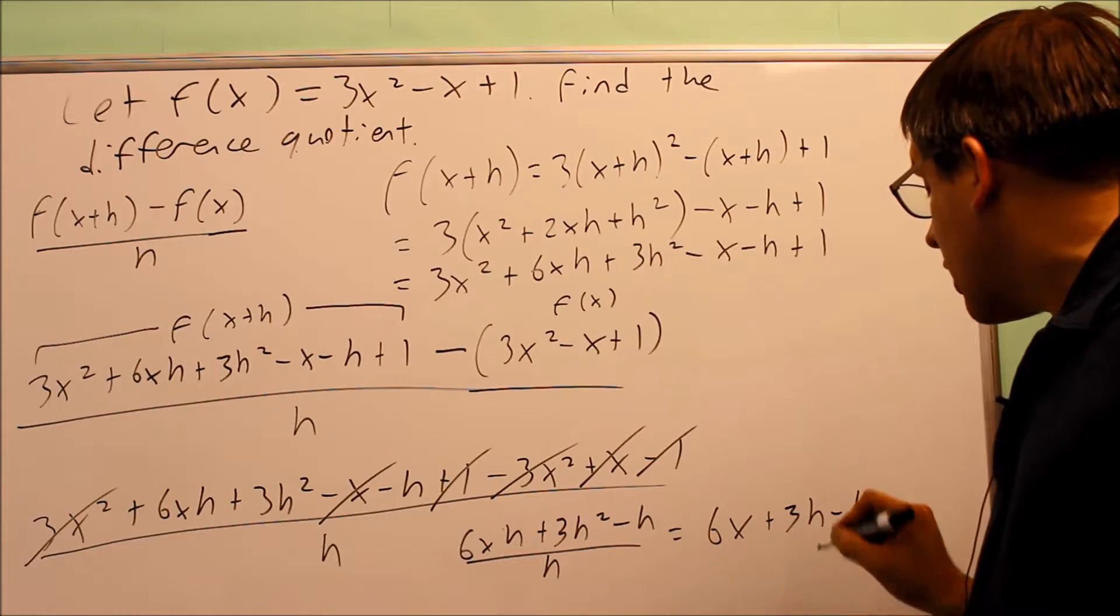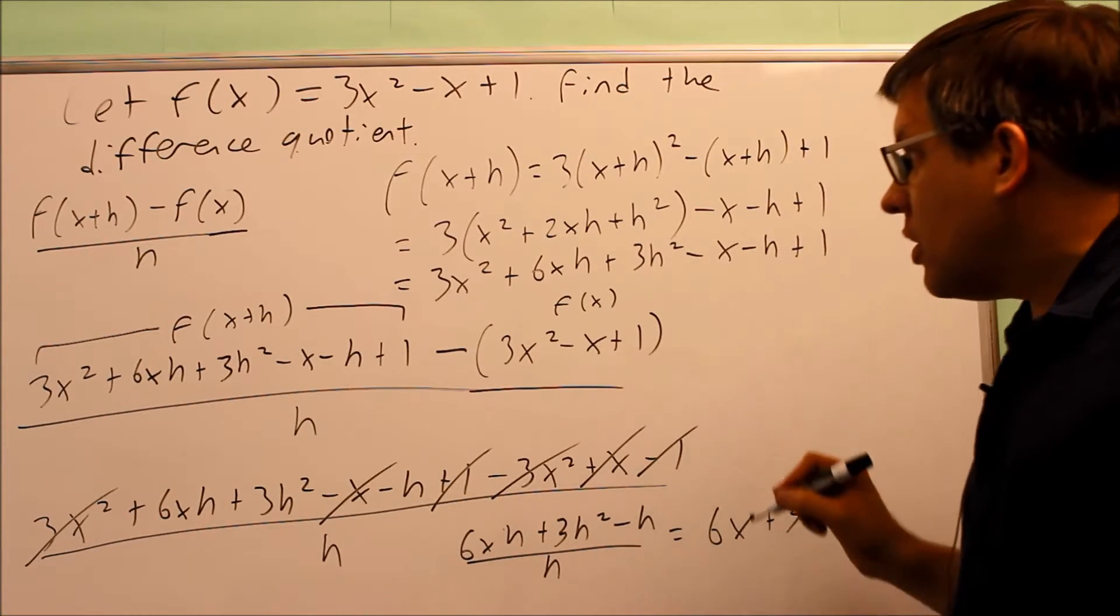This that results, 6x plus 3h minus 1, that would be the difference quotient.